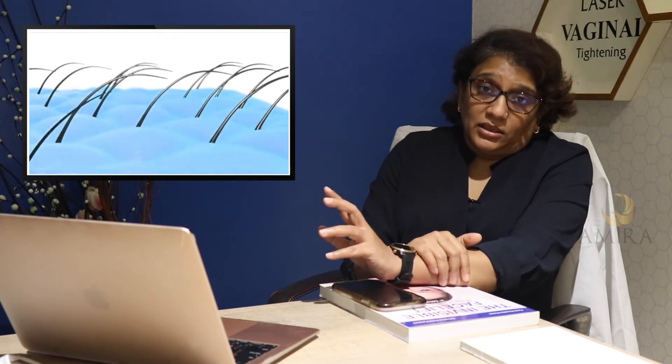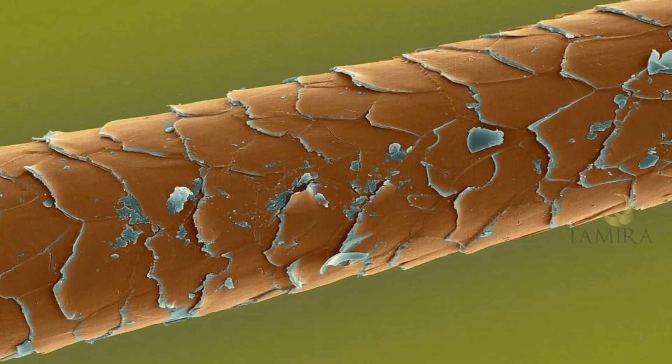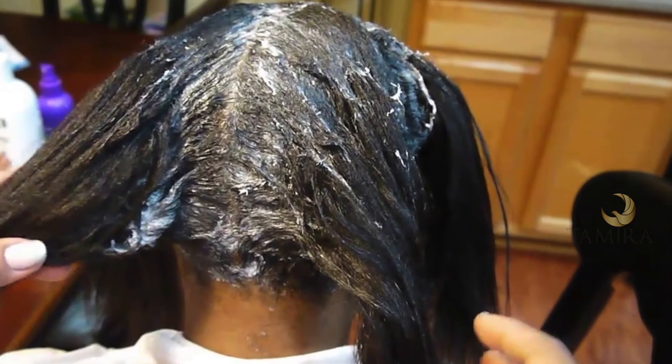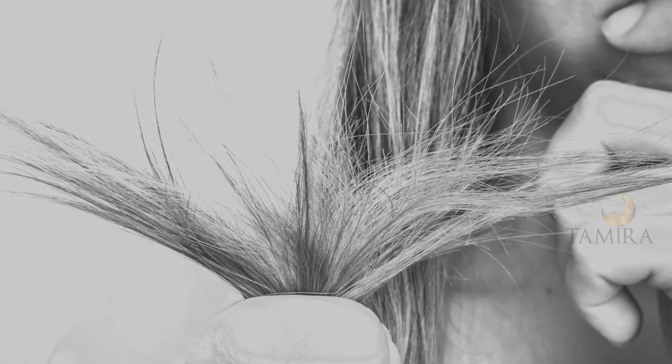Hair normally grows at a rate of 1 centimeter per month. For someone to have 24 centimeter long hair, it takes about 2 years — during which they would have washed their hair at least 700 times. Hair that is styled and washed more often has its outer cuticle damaged, and when treated repeatedly with chemicals for straightening and perming, it tends to get damaged further.